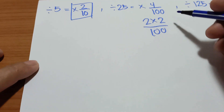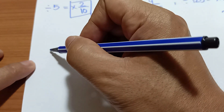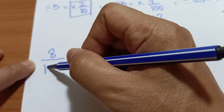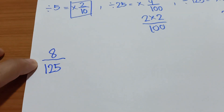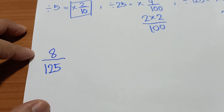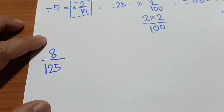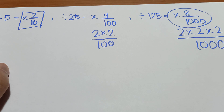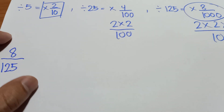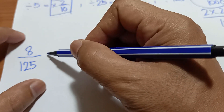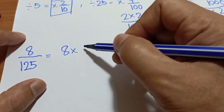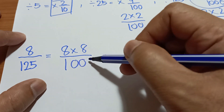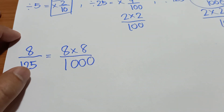Let's have an example. If you're going to divide 8 by 125, go back to the basic: multiply by 8 over 1,000. So that is 8 times 8 over 1,000.